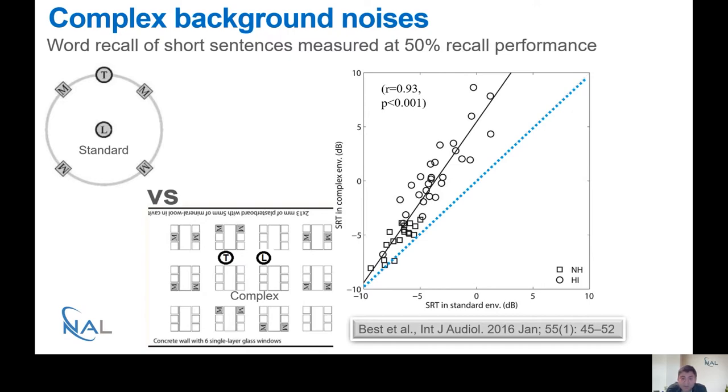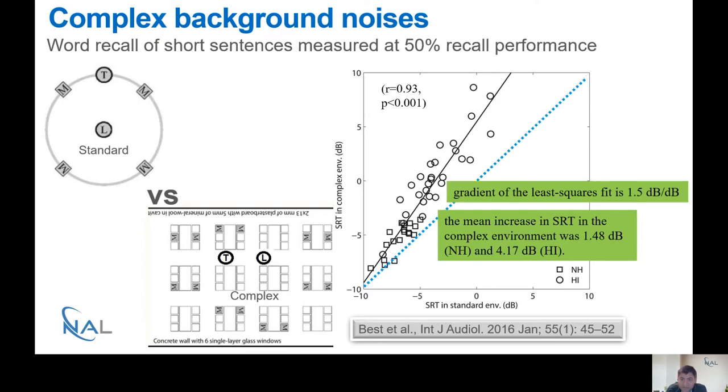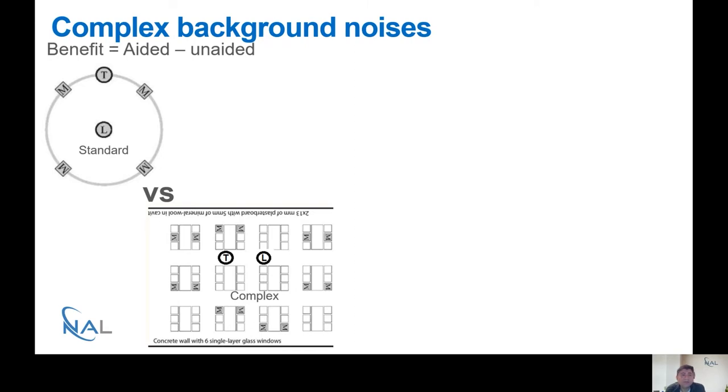For the most part, the observations are well above the dotted line. What does that mean? It means that on average, people perform better in the complex environment than they did in the standard environment. The normal hearers performed about 1.8 dB better, whereas the hearing impaired listeners approximately 4 dB better.